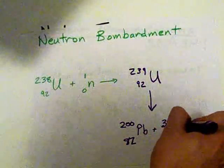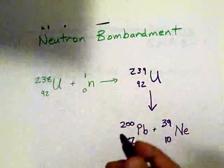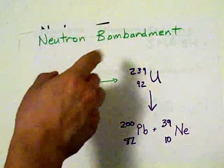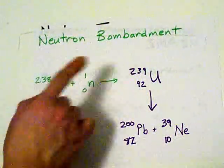And element number 10 is neon. I doubt neon has that mass, but whatever. The point is, when you bombard something with a neutron, it literally just combines into a new element.